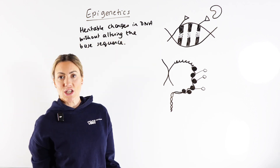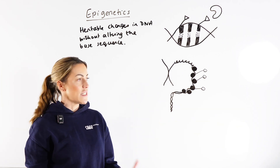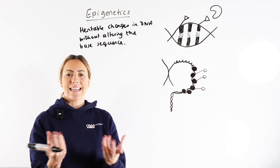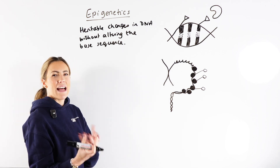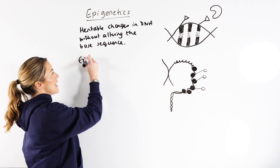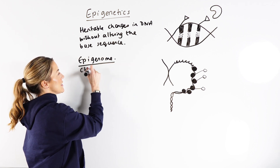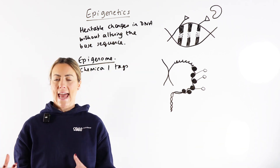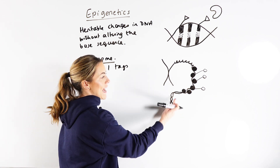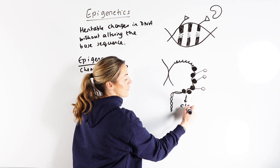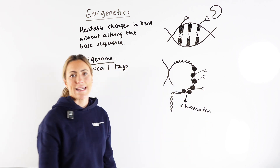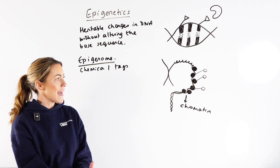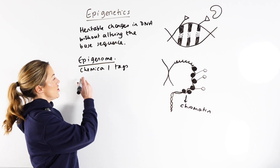So we're not talking about mutations or changes to the base sequence of the DNA or new alleles, but we're talking about chemicals around the DNA. So there's a chemical layer — these are kind of chemical tags — and this layer is called the epigenome. These chemical tags interact with the DNA and the histone proteins. DNA and histone proteins together, we call that complex chromatin. So the epigenome surrounds the chromatin, surrounds the DNA-histone protein complex, and it affects gene expression.